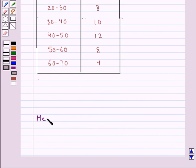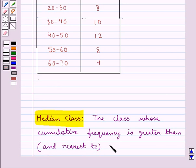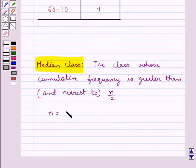Let's recall what is the median class. The median class is the class whose cumulative frequency is greater than and nearest to n/2, where n is the total frequency.